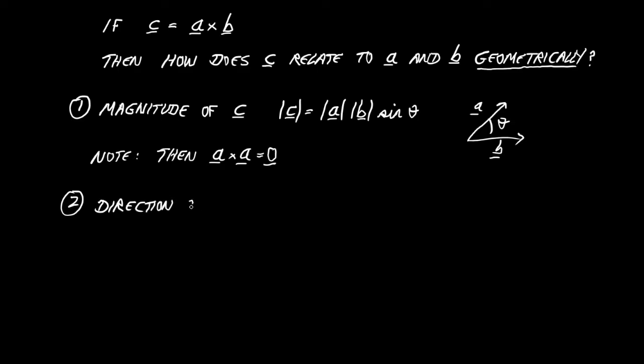That was easy enough. What about the direction of this new vector, C? How does that relate? Okay, here's the thing. The direction of C is perpendicular to both vectors A and B. So it's at right angles to each of those vectors separately and simultaneously.